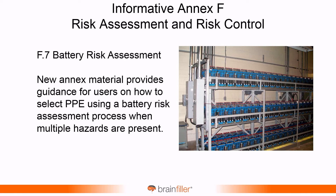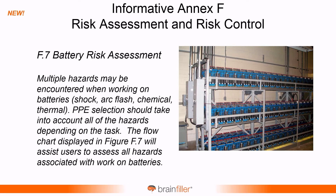There was a new F.7 that was added when you're working around battery systems. F.7 acknowledges that if you're working around battery systems, there's more than one hazard — there are multiple hazards that may be encountered when working on batteries. So you have the shock hazard, the possible arc flash hazard, the chemical hazard, and the thermal hazard. It's acknowledging that PPE selection needs to take into account all these hazards, and there's a flowchart to help with this.